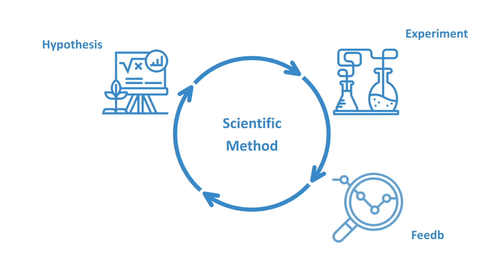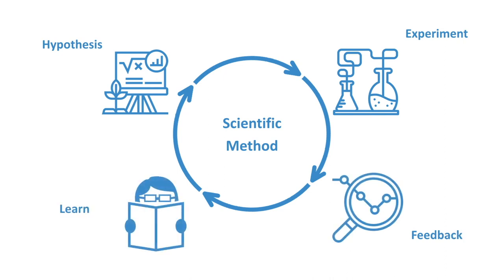The experiment gives us feedback. We can look at that, learn from it, and see: did our hypothesis work? Was it correct? That learning feeds back into the creation of the next hypothesis or adjustment — do we need to refine things, throw it out, or start a whole new hypothesis? So that's a systematic, scientific method for doing systems innovation and experimenting in the lab.